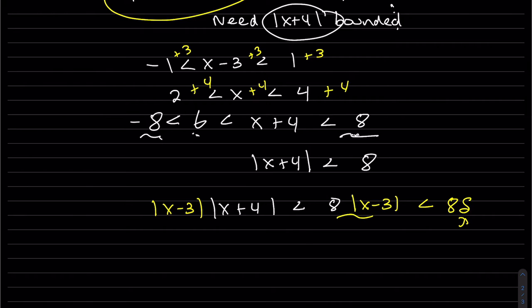So it looks like I'm going to choose delta equal to epsilon over 8. So that when I multiply times 8, the 8 will cancel, I get epsilon. Okay, so now that's our formal proof.